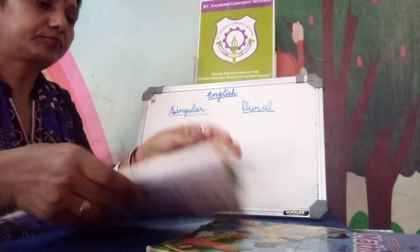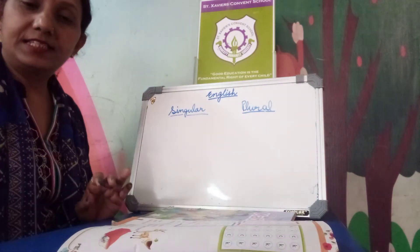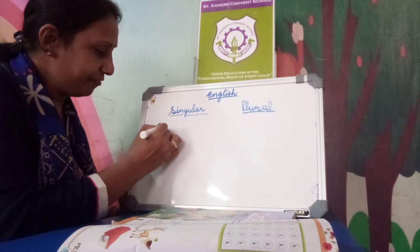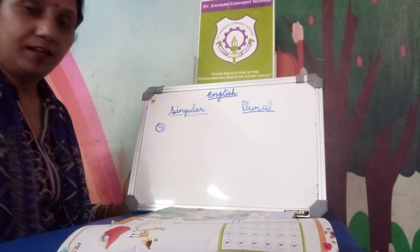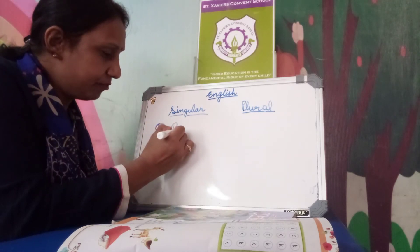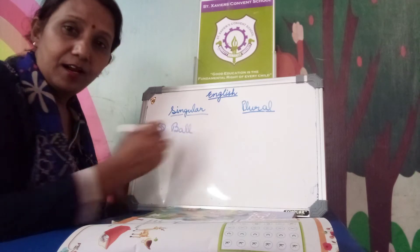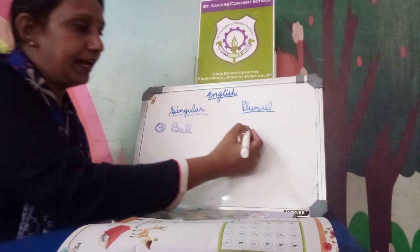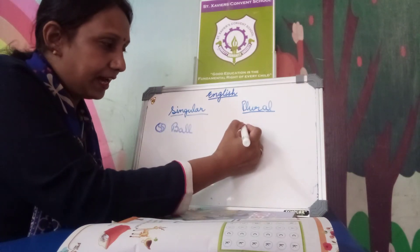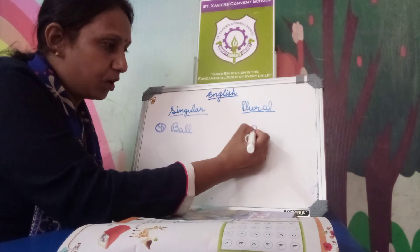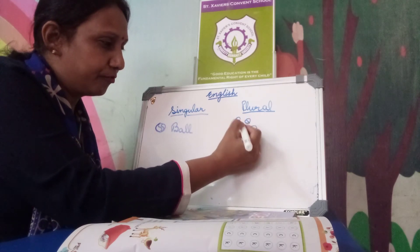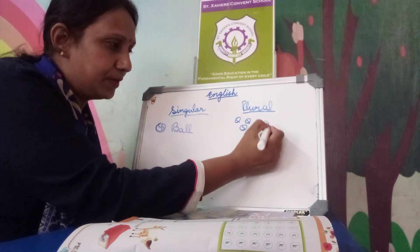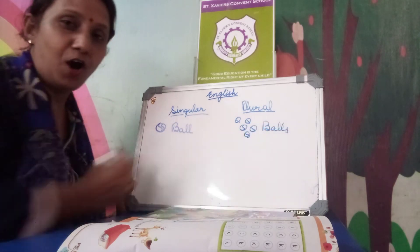Here, just see what I have made for you — your very favorite ball. This is what? Ball. So in singular, what will you write? Spelling of ball: B-A-L-L. Now when it is in plural, when the things are many — like one ball, two, three, four, five, more than one — that one is called balls. Spelling of balls: B-A-L-L-S.